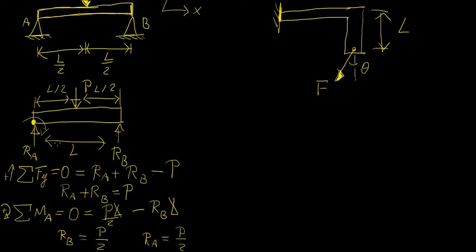Notice what we did: by taking the sum of moments about point A, we neglected the effect of RA, because the distance from point A to RA is zero — the force acts exactly at that point. This eliminated one unknown and let us solve for RB, then solve for both using the force equation. This is why we need the sum of moments, and in general this approach is sufficient to solve any system with a reasonable number of defined external forces.